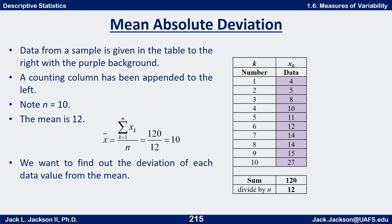Suppose we have this particular data set with the purple background: 4, 5, 8, 10, 11, 12, 14, 14, 14, 15, and 27. I've put them in increasing order and the number k is just a counting variable or index variable. This is the first one, second one, third one in the increasing order. So it's the rank as well.